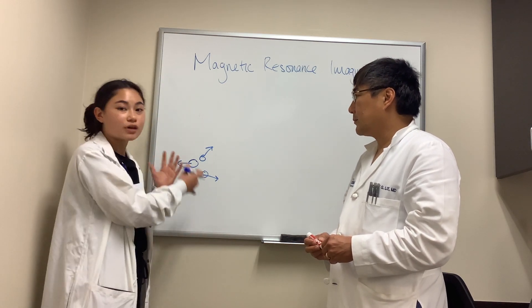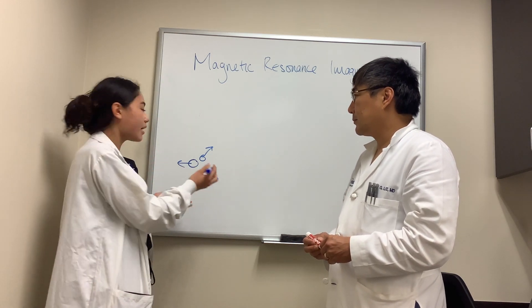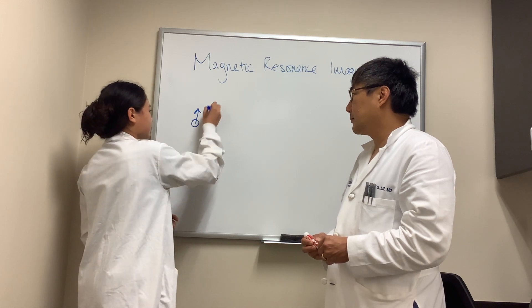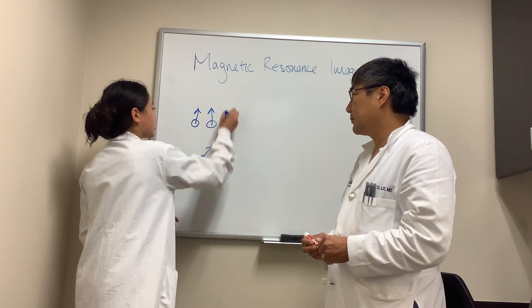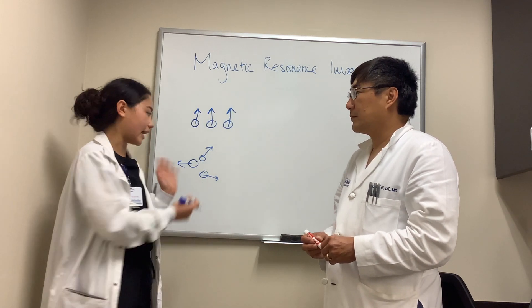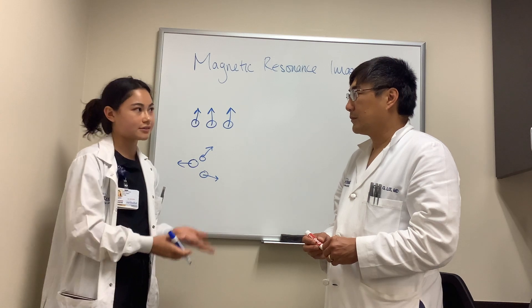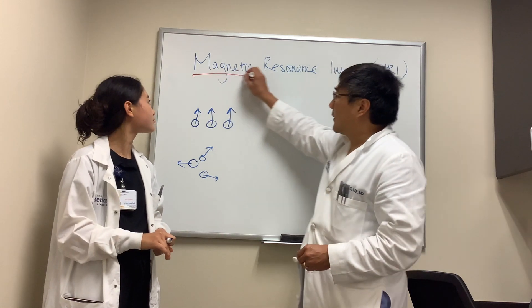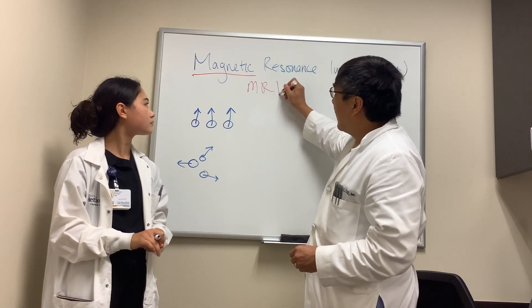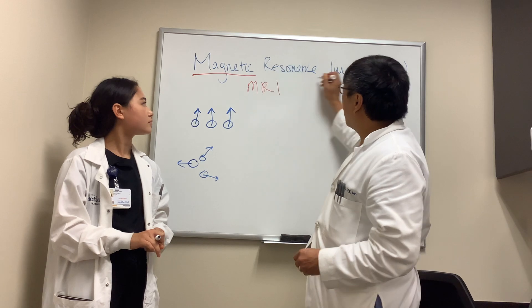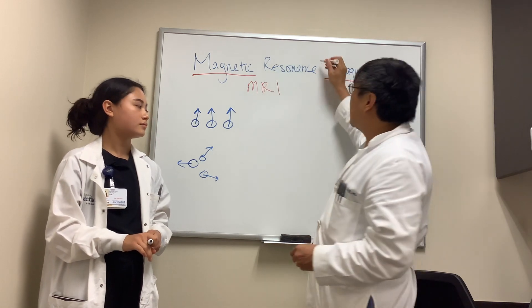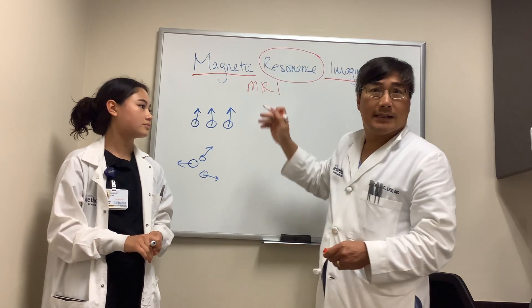But when you get put into the MRI machine, all of the hydrogens face the same direction because they act as tiny magnets. That is the magnetic part of MRI, and how we get any imaging out of that is dependent on the resonance.